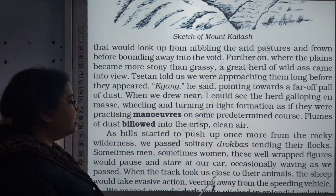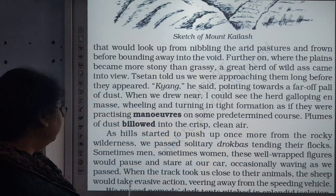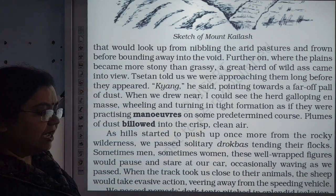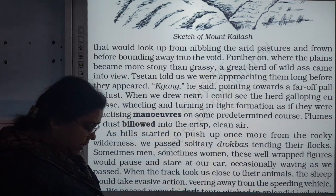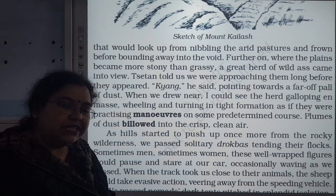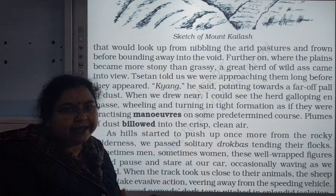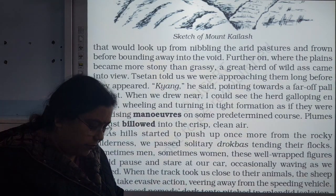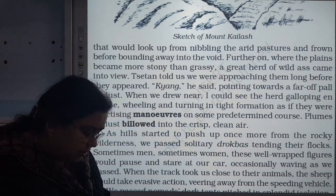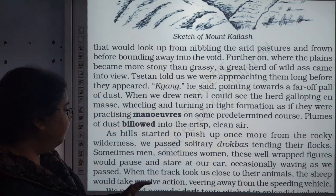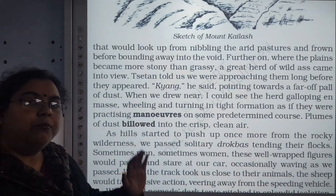When the track took them close to the animals, the sheep would take evasive action — evasive action means avoiding action — veering away from the speeding vehicle. Wearing away means they were moving away, trying to have a defensive kind of movement to avoid the car.